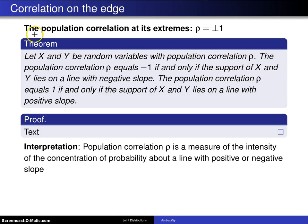So let's take a look at those two extreme cases, that is, when the population correlation rho is equal to positive 1 or negative 1. Here's a theorem.